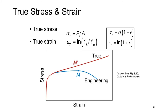In the stress-strain curve, we look at the initial value of cross-section. What if we measure the cross-section at each step and use it in our formula? In that case, we are dealing with true stress and strain compared to engineering stress and strain. True stress is force divided by the actual cross-sectional area at each moment. True strain is the natural log of Li divided by initial length. From these two relations, we can find the relationship between true stress and engineering stress, and true strain and engineering strain.